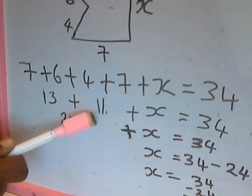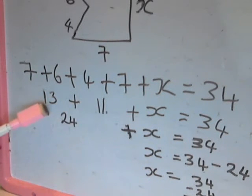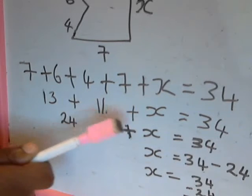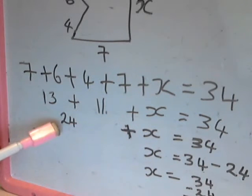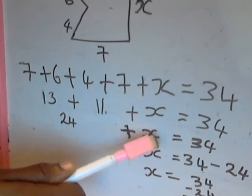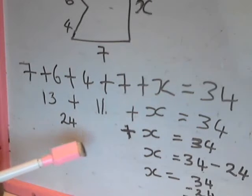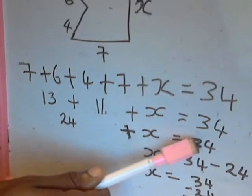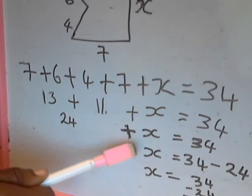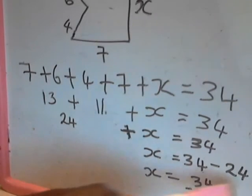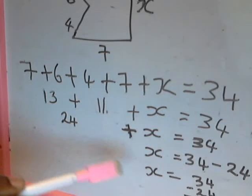So we write 13 plus 11. We're breaking it down gradually so that we don't make a mistake. So we have 13 plus 11 plus x gives us 34. Then we add 13 plus 11, that gives us 24 plus x equals 34. We're getting there. So now we have x here and we have 34 there and 24. Now for us to find what x is, we leave x here and we take 24 to the other side.